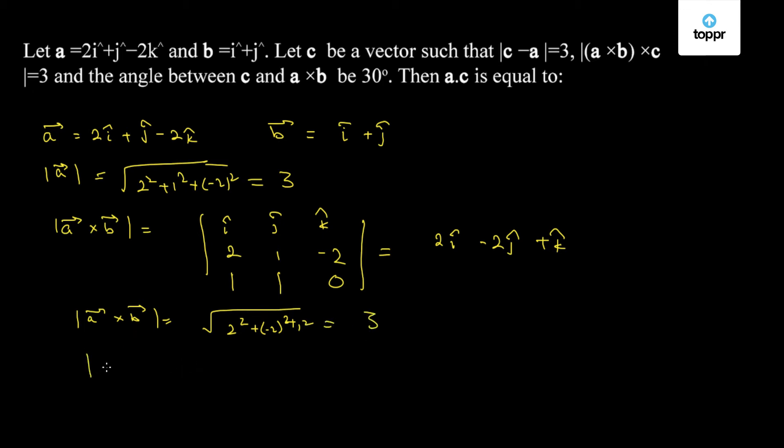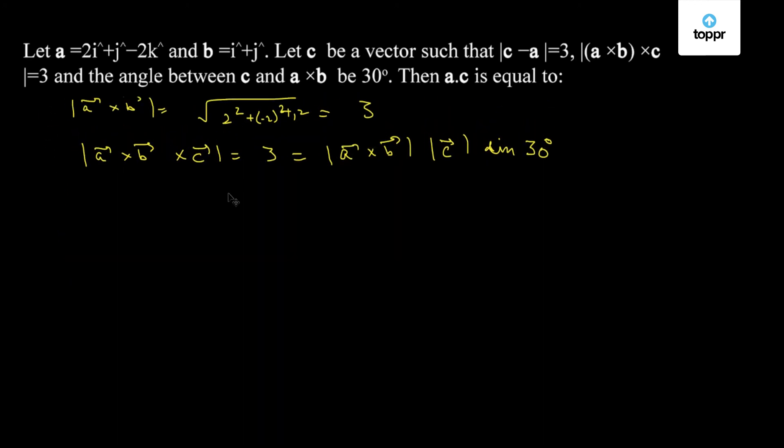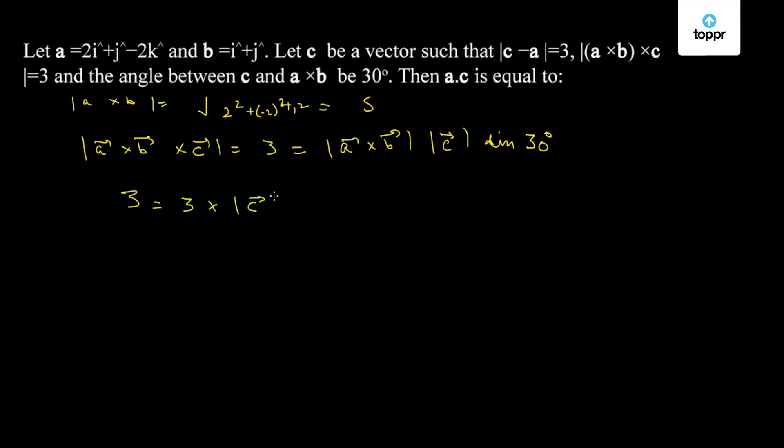Now, we are given that mod of a cross b cross c is equal to 3 which is equal to mod of a cross b times mod of c into sine of angle between them that is 30 degrees in this case. Solving this we have 3 equal to 3 times mod c times half. So, we have mod of c equal to 2.